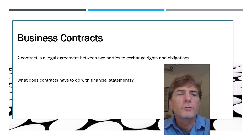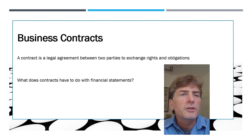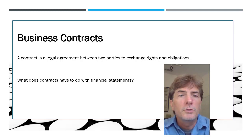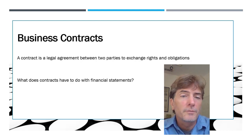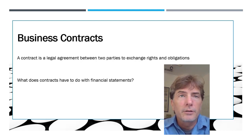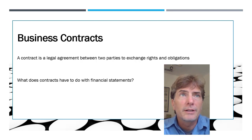In this lecture we're going to focus on business contracts. A typical definition of a contract is a legal agreement between two parties to exchange rights and obligations. Most people are familiar with contracts because they've participated in them. For example, if you have a cell phone, you've got a contract with the mobile phone company to have access to their cell towers, and in exchange you're making them payments.